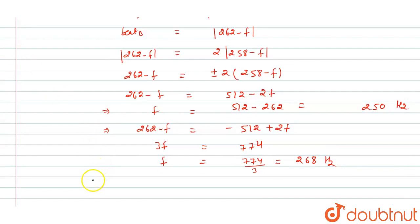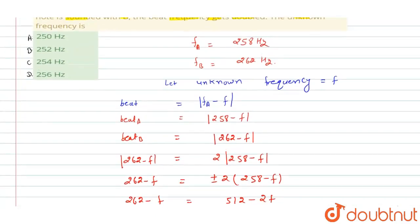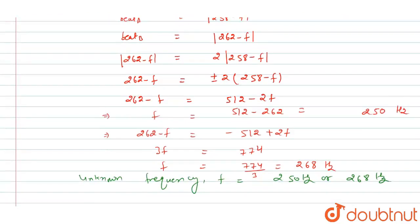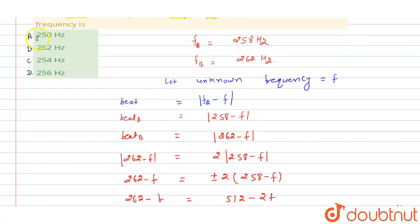Now we can write here that unknown frequency can be f is equal to 250 hertz or 268 hertz. Now we have to see which of the following option is correct. So we have A 250 hertz, B 252, C 254, D 256. We are getting 250 or 268, so we can see according to option, only option A 250 hertz is correct answer for this question. I hope you understood the solution, thank you.